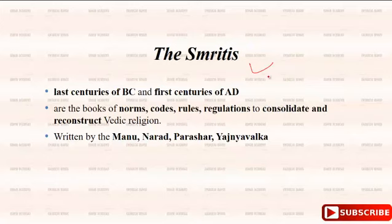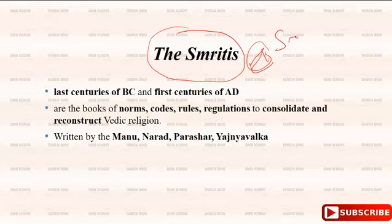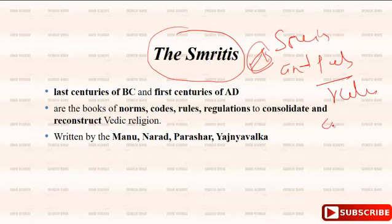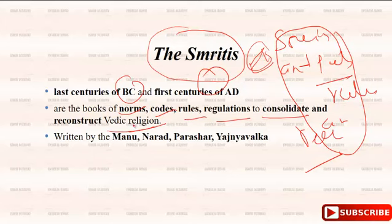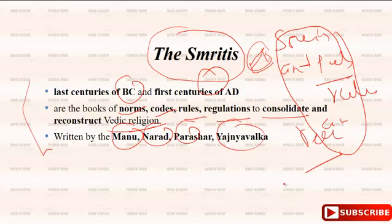Another important thing is the Smritis. The main theme of the Smritis is that social and political rules and regulations are given here. From the first and second century, norms, codes, rules, regulations, and consolidation of reconstructed Vedic religion are given. Important Smritis are written by Manu, Narada, Parasara, and Yajnavalkya. These are very important for reconstructing the ancient Indian history.